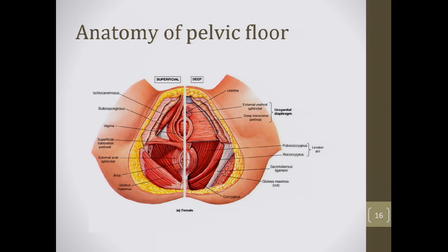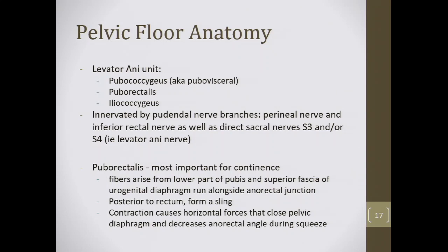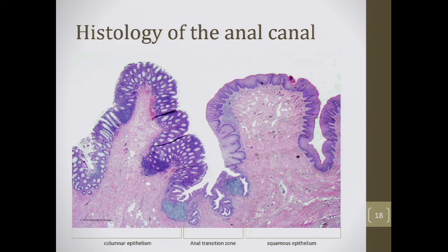The levator ani unit is composed of the pubococcygeus (also known as the pubovisceral muscle), the puborectalis, and the iliococcygeus. It's innervated by pudendal nerve branches — the perineal nerve and inferior rectal nerve — as well as direct sacral nerves S3 and sometimes S4. The puborectalis is the most important for continence: fibers arise from the lower pubis and superior fascia of the urogenital diaphragm, running alongside the anorectal junction and posteriorly forming a sling. Contraction of the puborectalis closes the pelvic diaphragm and decreases the anorectal angle during squeeze.